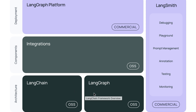LangChain and LangGraph are both free, open-source Python libraries. Their development and direction are guided by a for-profit company called LangChain, which also offers some paid features for debugging and deployment. Our use of LangChain and LangGraph will be 100% free, and there are also some LLMs that you can use for free.